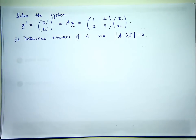By these two vertical lines, I'm not talking about absolute value, I'm talking about the determinant of the matrix A minus lambda I, where I is the identity matrix.